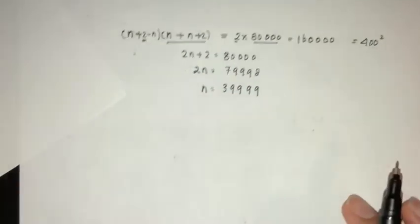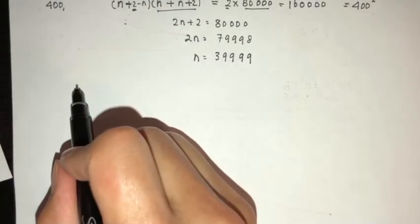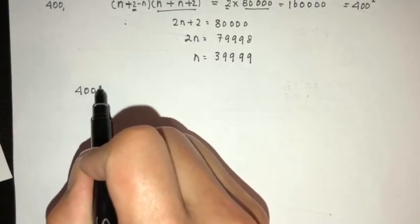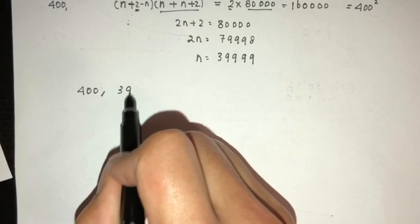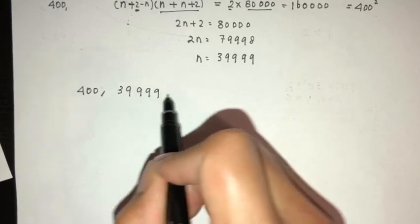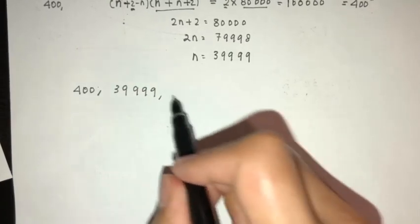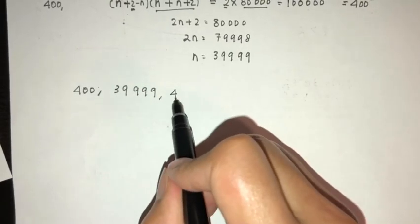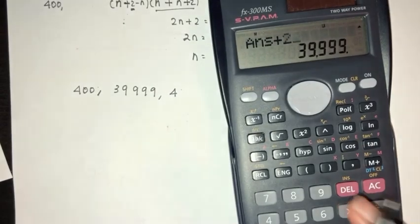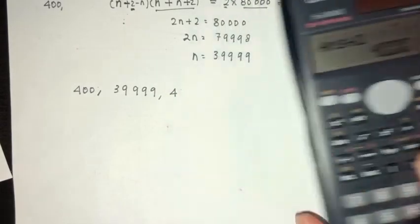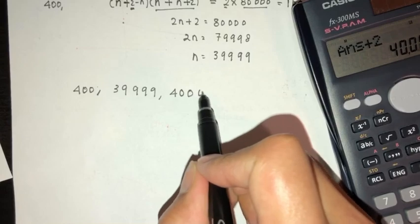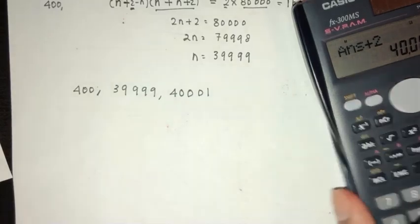So the three numbers of the Pythagorean triple are: 400, 39999, and 39999 plus 2 equals 40001. That is the final answer.